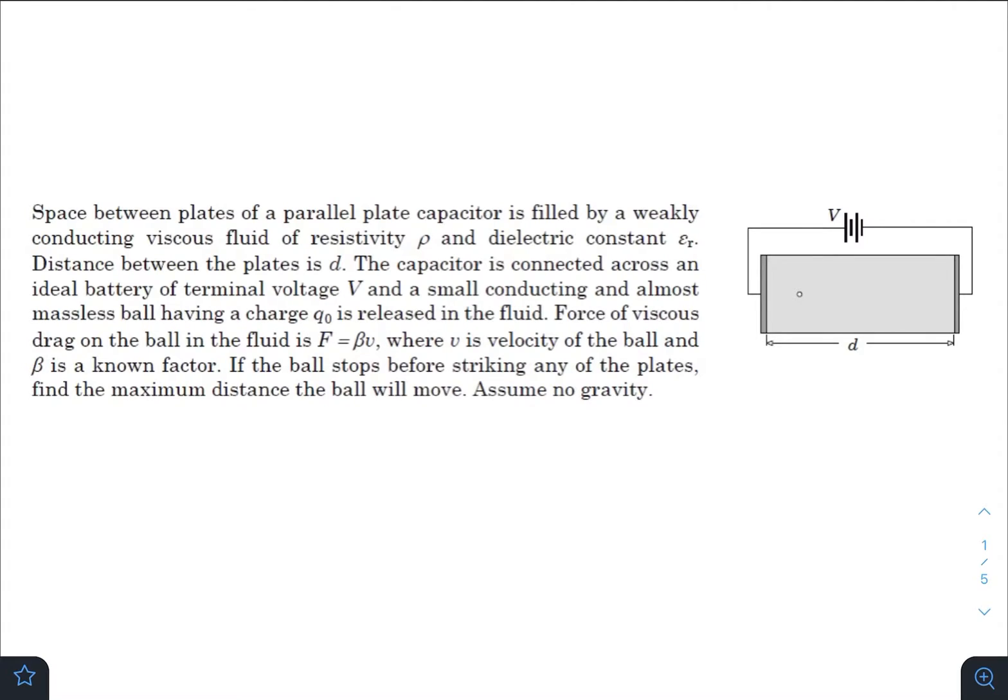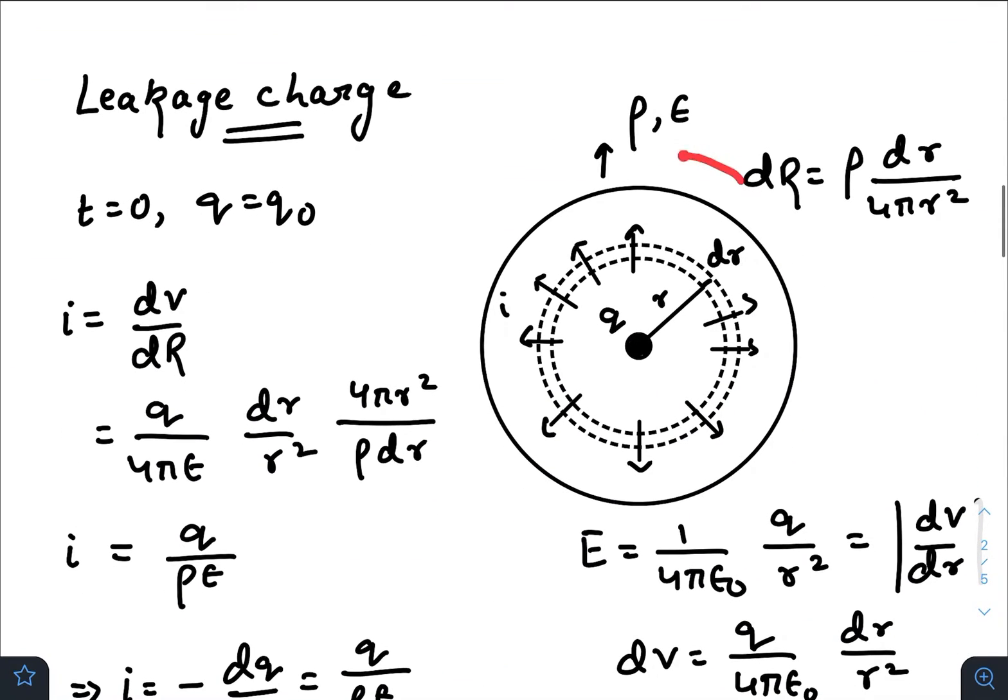To solve this question, we need to understand the concept of leakage current first. Please see this diagram. This is a spherical region of very large radius, and this is the conducting medium having resistivity ρ and permittivity ε. I have placed a charge at the center of the sphere.